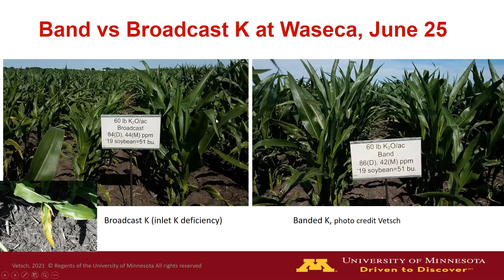This picture shows the same pair of plots as the previous slide, but taken two days later with the sun at a different angle. On the left is the broadcast side — you can see the unevenness and minimal leaf area index and height compared to the banded side on the right. The inset picture shows the K deficiency in the leaves that was very evident on the broadcast side, visible as burning edges on the leaves compared to the banded plots.